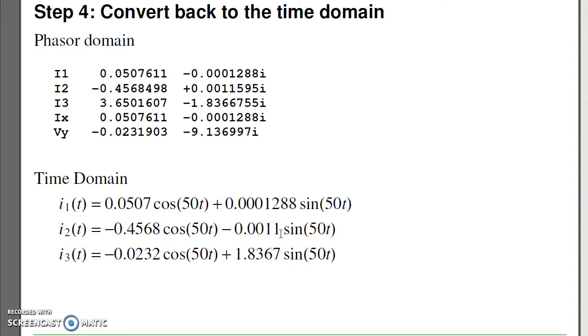So current loops work with complex numbers. Voltage nodes work with complex numbers. Everything we did before still works, just now we're using complex numbers. In our next video, we'll look at Thevenin's, and not surprisingly, Thevenin's also works with complex numbers.